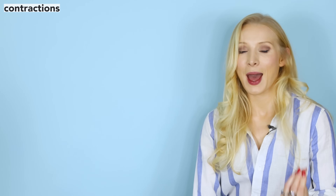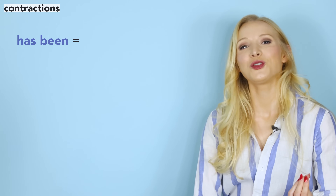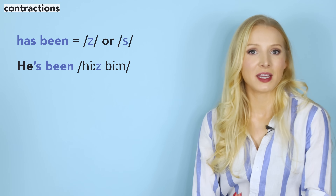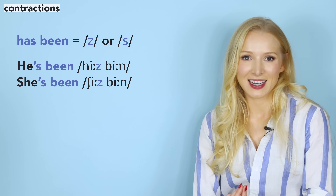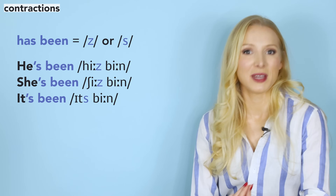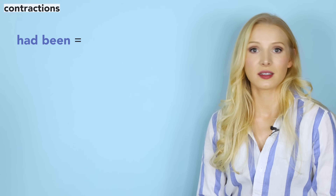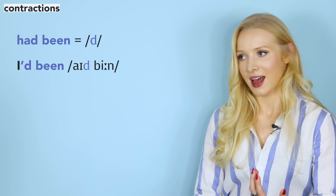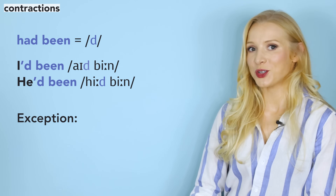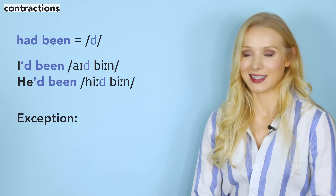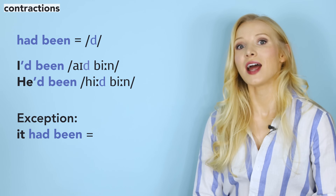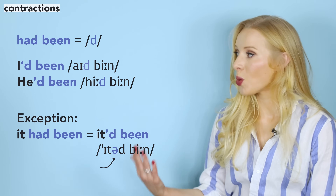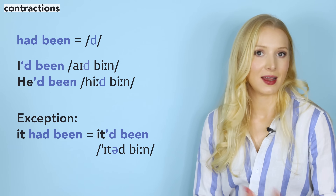The same thing happens to 'has been,' which reduces to 's or 'z — for example, he's been, she's been and it's been. And 'had been' contracts to 'd — for example, I'd been and he'd been. There's an exception with the contraction of 'it had': it had been contracts to 'it'd,' with an extra schwa sound that adds an extra syllable.